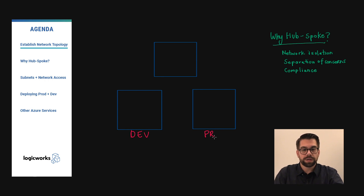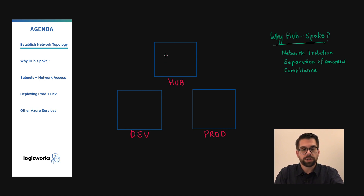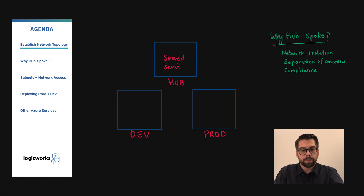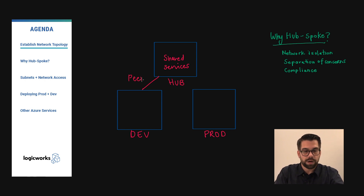Before we continue, we need to establish a third virtual network and environment called hub or shared services. The purpose of this virtual network is to deploy all of our shared or dependent services within it. In order to allow connectivity between dev and prod, we need to establish VNet peering from the dev and prod virtual networks to the hub virtual network.